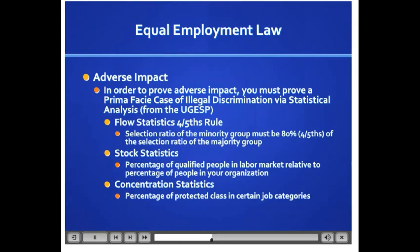Basically, how adverse impact works: we turn around and say there's a problem with the hiring rate of this company. We get the data, do the analysis, and say there's an adverse impact here. The onus then falls on the employer to say: yes, we may be having an adverse impact, but the selection tool we're using is valid and legitimate. If it's a good, valid, legitimate tool, there's not much you can do about it. But in a situation like Duke Power — where the high school diploma was not needed, not valid, not legitimate — that's the adverse impact problem.